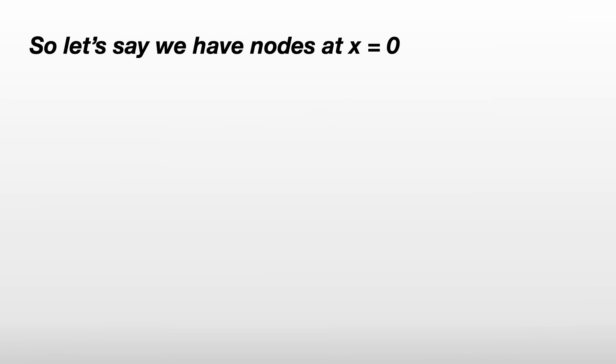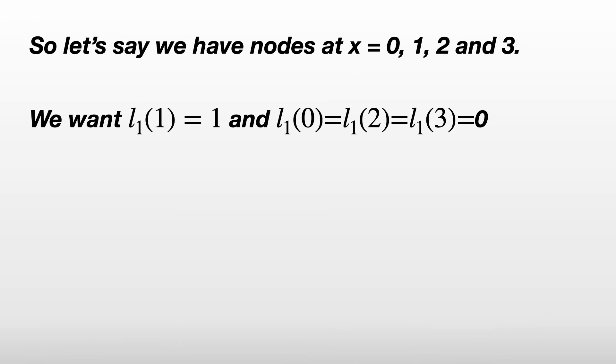So let's say we have the nodes at x equals 0, 1, 2, and 3. We want L_1 to be 1 at the second node 1. Sorry that's confusing, but L_0 would relate to the first node 0.